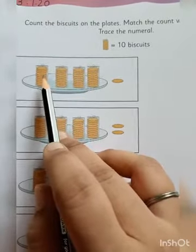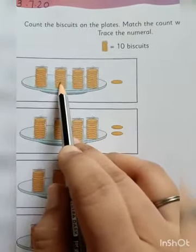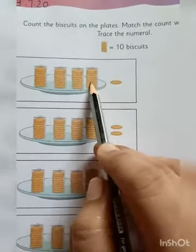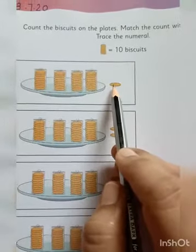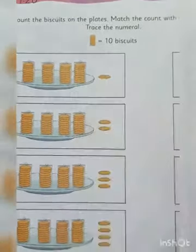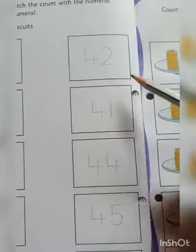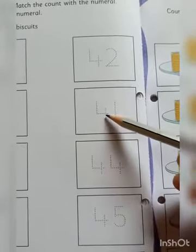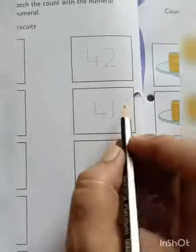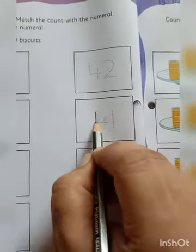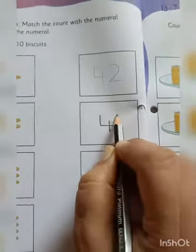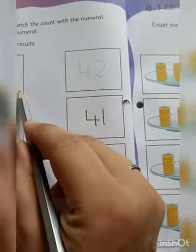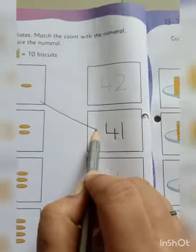In one packet there are 10 biscuits. Let's count: 10, 20, 30, 40, and here one loose biscuit is there, so 41. Now where is number 41? Here. No, here. 4 tens and 1. First thing you will do is trace the number and then match it with the correct box.